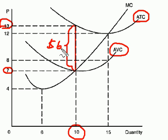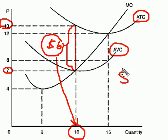But if you take the average fixed cost of $6 and multiply it times the level of production, 10, that gives us $60 for the total fixed cost for the firm.